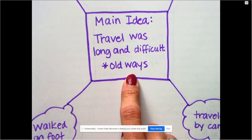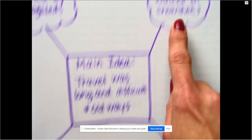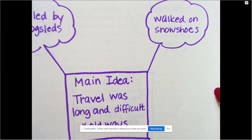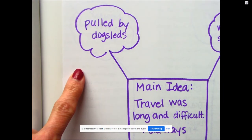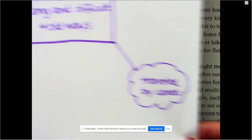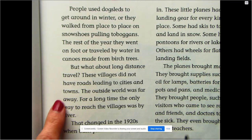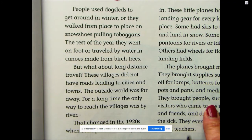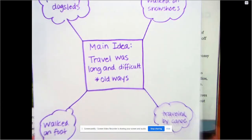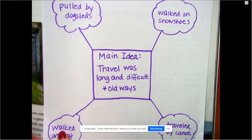If we were to reread that story, we would learn that — but what's the proof? What are some things that made it difficult? Well, they told us they walked using snowshoes. That's a tricky thing to do if you've ever done that. They had to get around on snowshoes in all that snow. They also had to be pulled by dog sleds. They walked around on foot, and they also traveled by canoe. I found all of this information about the old ways right here in this section on getting around. So thinking about just this one page, I can talk about what it's mostly about — travel was long and difficult — and I was able to pull out these details to prove it.